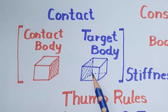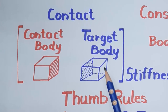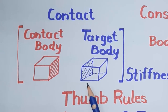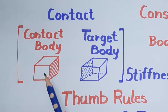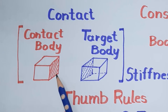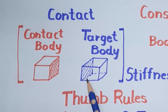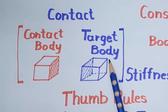For defining a contact, we need a contact body and one target body. For example, here there are two cubes touching each other. We have to define a contact body and one target body. The surface of the contact body touching is called the contact side, and the other is called the target side for the target body.